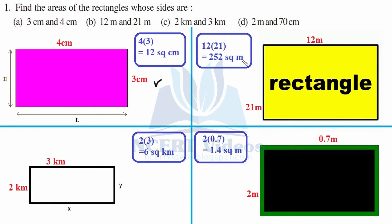Remember to put the units — unit is meter. Third rectangle: 2 kilometer and 3 kilometer. You can take any dimensions, that is length into breadth. When we multiply it, it is 6 square kilometer.